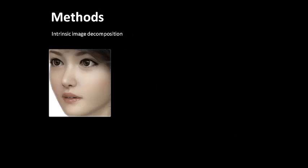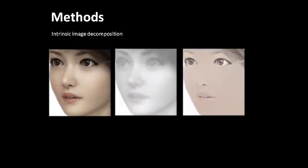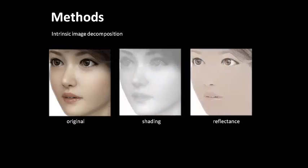We performed a psychophysics experimental study testing people's discrimination of photos from computer-generated, or CG, images. For this study, we prepared test images using intrinsic image decomposition. Thus, original, shading, and reflectance versions of CG and photo images were shown to participants.